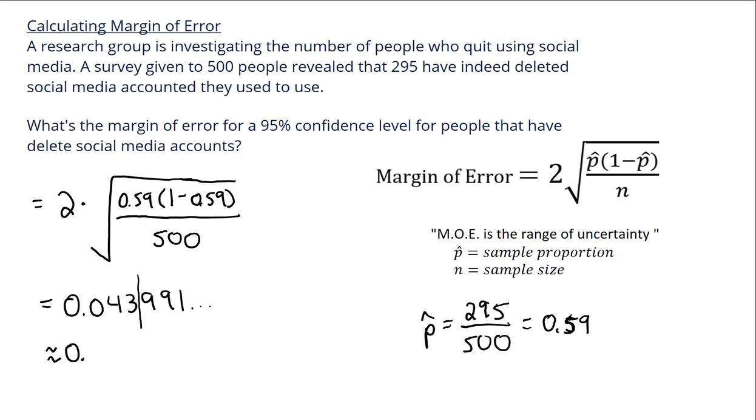So I'm going to keep 0.04, that 9 turns that 3 into a 4, and this is going to be the margin of error right here.